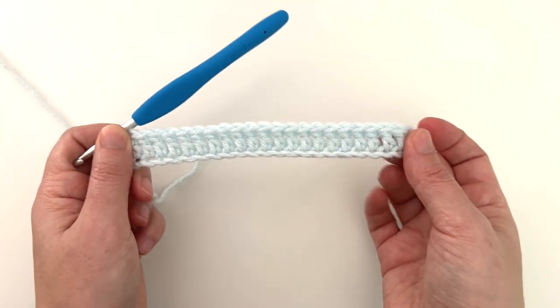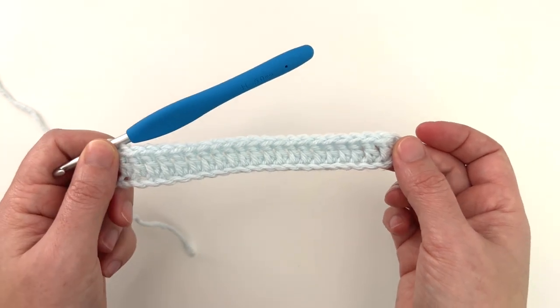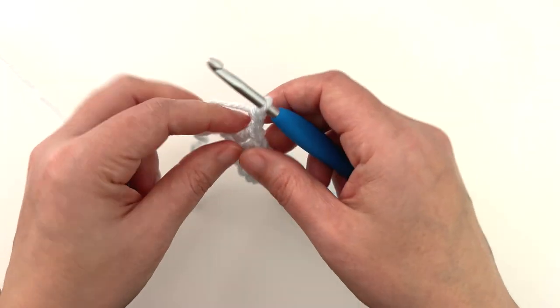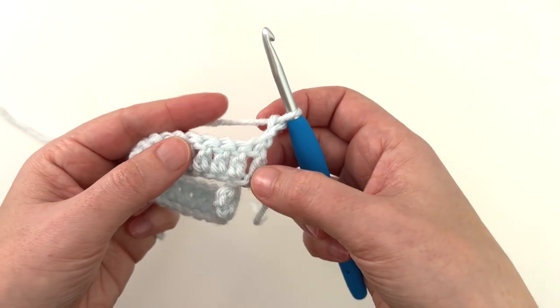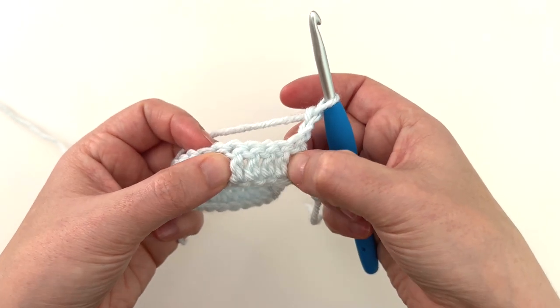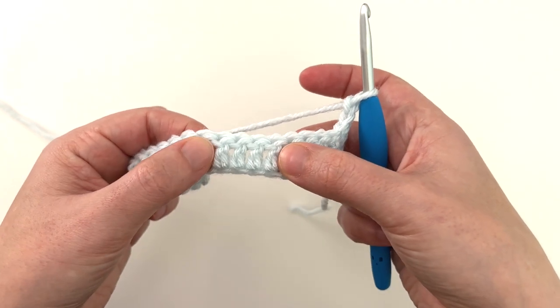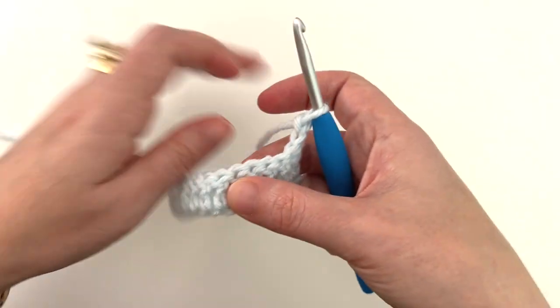Here we have our setup row of double crochets. Now for row two, chain two, which does count as a stitch. Turn your work. Now we're going to front post double crochet around the next four stitches and then we'll back post double crochet around the following four and then we will repeat that pattern all the way across.